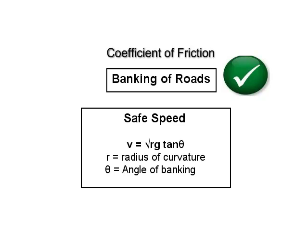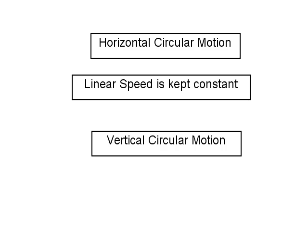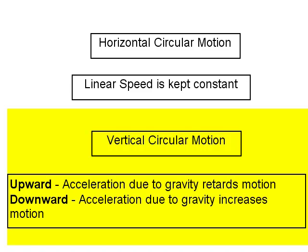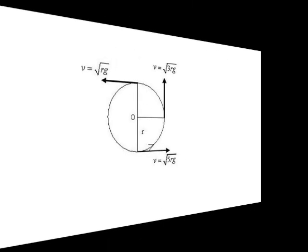Up till now, we have considered circular motion only in the horizontal plane. Now let us consider vertical circular motion, that is circular motion in a vertical plane. It is different from horizontal circular motion because in horizontal circular motion, the linear speed of the body can be kept easily constant. In vertical circular motion, when the body goes up, the acceleration due to gravity retards the motion, and when the body comes down, gravity helps the motion. This is why when the body is going up, its velocity decreases, and when coming down, its velocity increases. The figure shows vertical circular motion of a body in anti-clockwise sense.